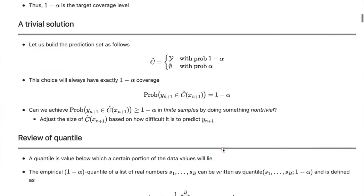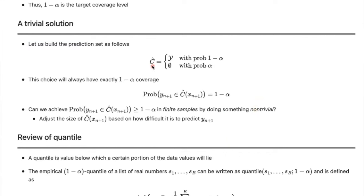Let's look at the trivial solution. We can easily solve this problem by creating a prediction set equal to the total output space with probability 1 minus alpha, and returning an empty set with probability alpha. For a binary classification problem with two classes, zero and one, you return both labels with probability 1 minus alpha, and nothing with probability alpha. You can show this gives exactly 1 minus alpha coverage, but this is a useless solution because it doesn't tell us anything about the uncertainty of the machine learning model.